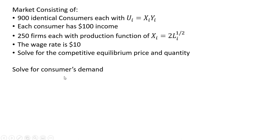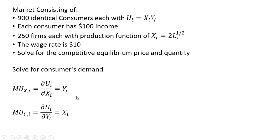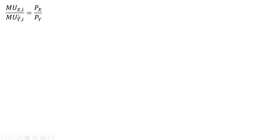We want to solve for the competitive equilibrium price and quantity. We're going to start with the demand side, first solving for the individual consumer's demand by getting the utility maximizing condition. We'll get the marginal utility of good X for consumer i by taking the partial derivative of the utility function with respect to good X — we get back Y. Then getting the marginal utility of good Y by taking the partial derivative with respect to good Y, we get back X. To maximize utility, we set the marginal rate of substitution — the marginal utility of good X divided by the marginal utility of good Y — equal to the price of good X divided by the price of good Y. Substituting in, MU of X is Y and MU of Y is X, and we solve this for Y.